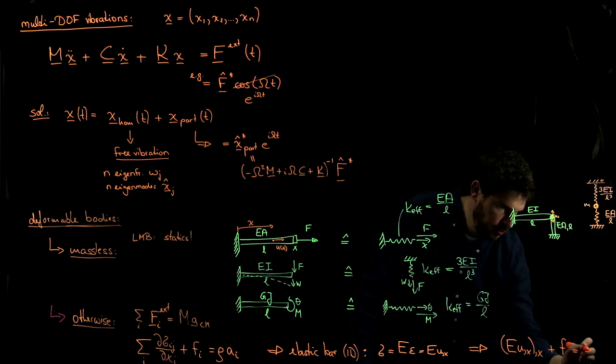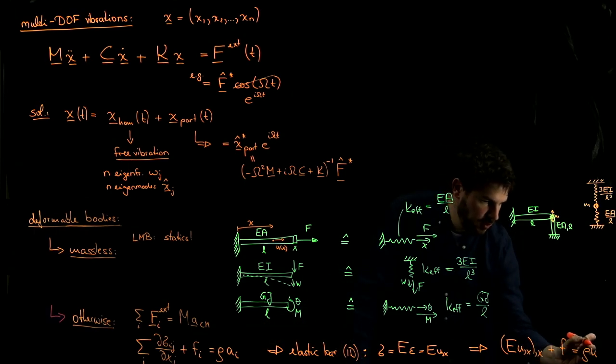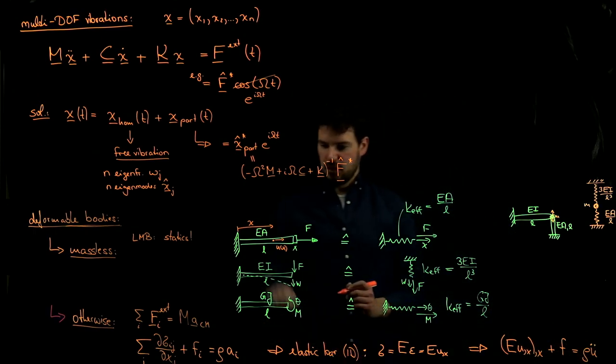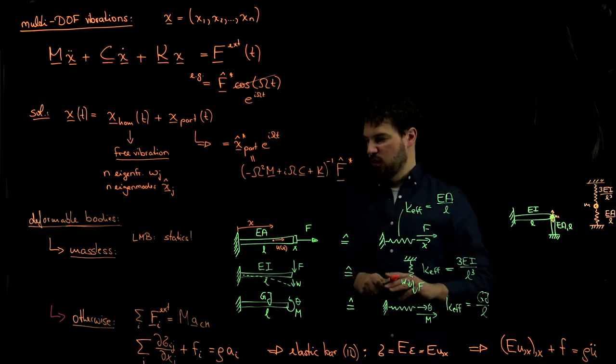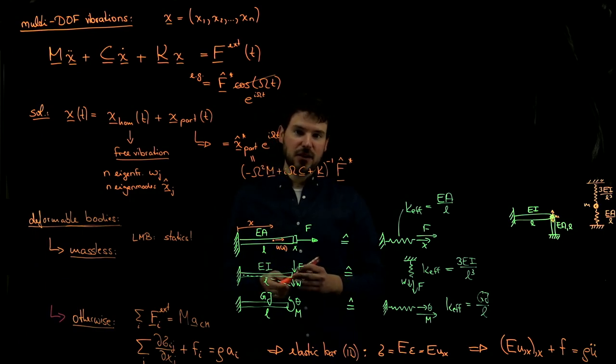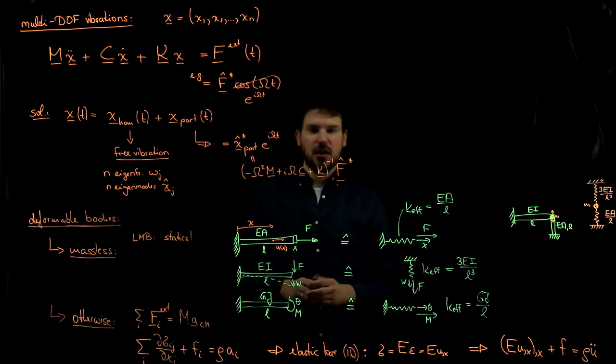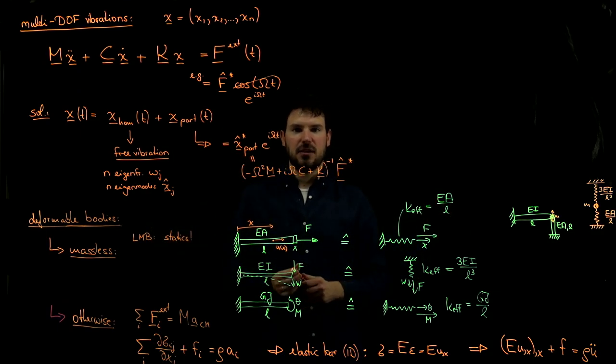Equals rho times the acceleration. So the acceleration is the second derivative of the position of a point which boils down to the second derivative of this displacement u. This is the local form of linear momentum balance for an elastic deformable rod. And next week we'll see that this is exactly what governs the motion of waves and the vibration of elastic rods.